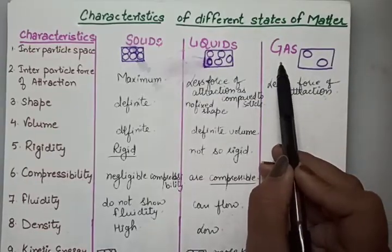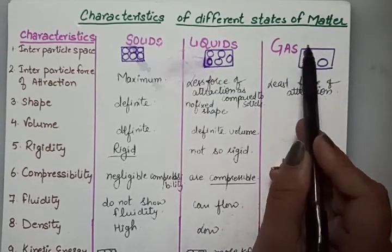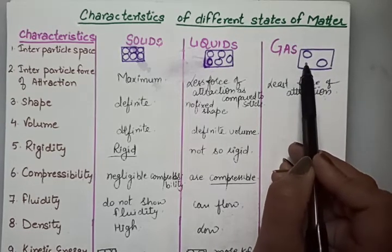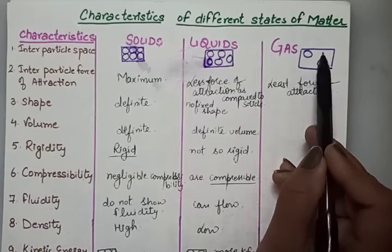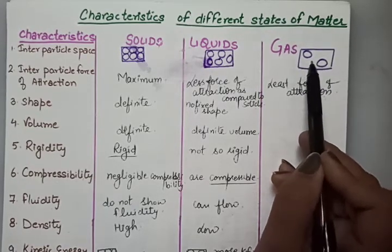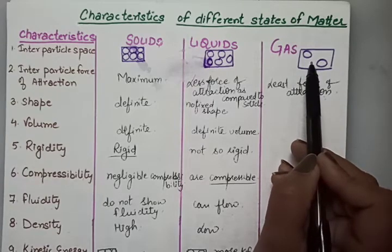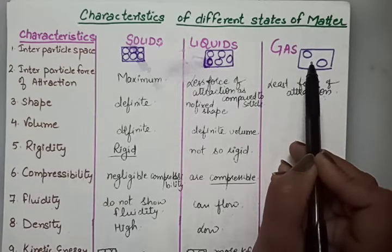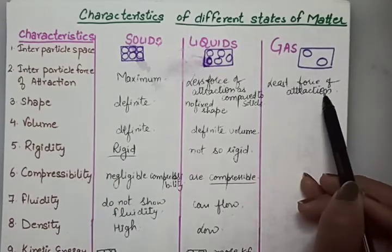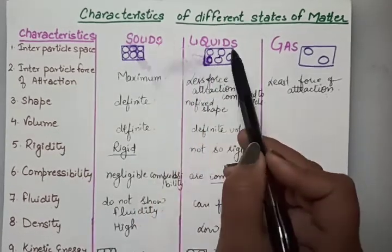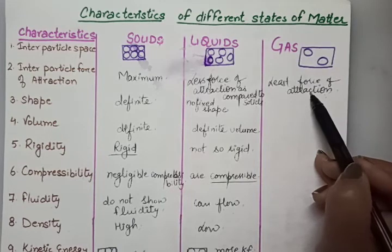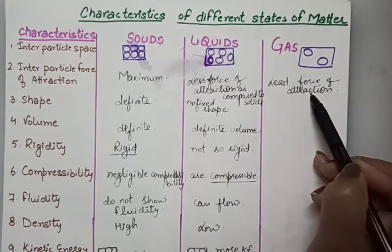Next is about gases. In gases, the particles are present very far away from each other — they have maximum spaces between them. Due to this maximum space, their forces of attraction are very less — the least among solid, liquid, and gas. In gases, the particles have minimum or least forces of attraction.